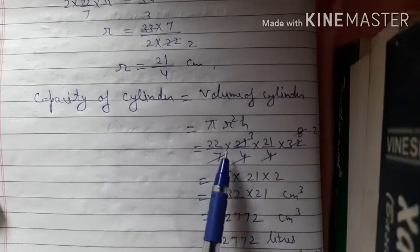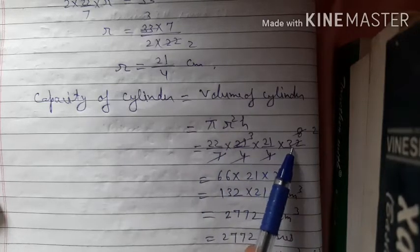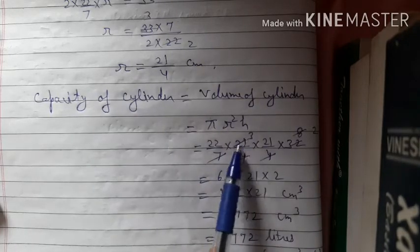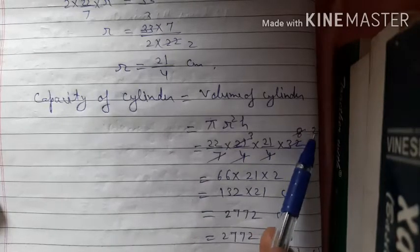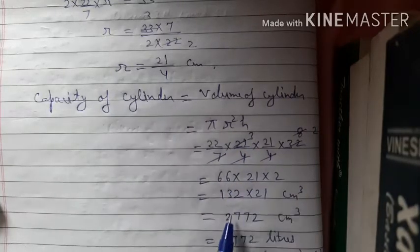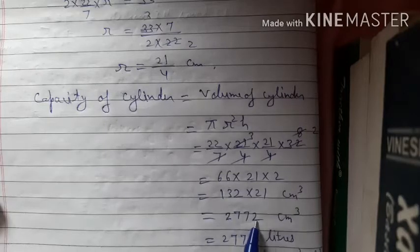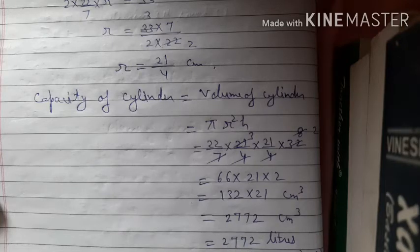Volume = π × (21/4)² × 32 = (22/7) × (21/4) × (21/4) × 32. Cancelling 7 with 21 gives 3, and 4 with 32 gives 8, then 4 with 8 gives 2. This gives 22 × 3 × 21 × 2 = 2772 cm³. The capacity is 2772 cm³. Converting: 1 cm³ = 1/1000 litre, so the capacity is 2.772 litres. The answer: capacity of the cylinder is 2772 cm³.